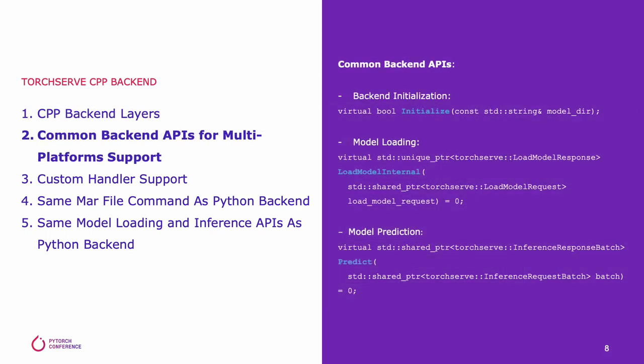The common back-end API layer defines three virtual functions for different machine learning platforms to plug in. Function initialize is for machine learning platform initialization. Function load_model_internal is used to implement model loading in different machine learning platforms. Function predict is used to implement prediction in different machine learning platforms.